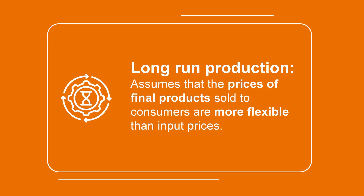This video is about long-run production. We know that this is equivalent to a significant period of time, but what does that mean in macroeconomics? The first thing we have to keep in mind is price flexibility. Price flexibility is not the same for all goods and services. That is why, in macroeconomics, we use an assumption in order to simplify and establish the difference between the short-run and the long-run. This assumption consists on the fact that the prices of final products sold to consumers are more flexible than input prices.